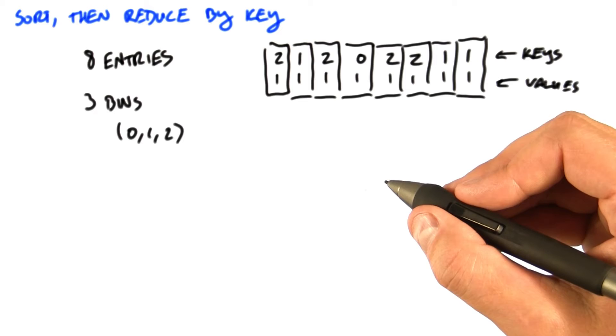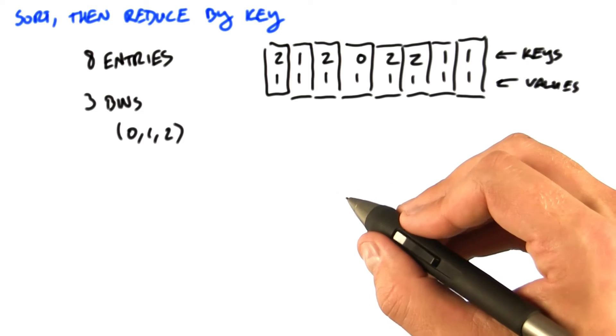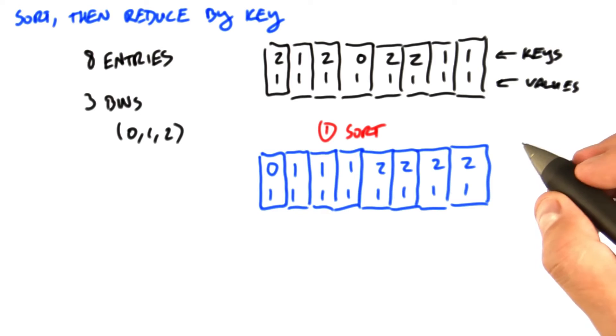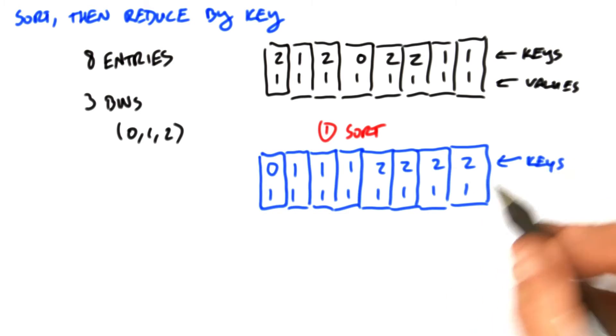This algorithm has two steps. The first is a sort, the second is a reduce. So first, let's look at the sort. We're going to sort the key value pairs by key. So here's our keys, and notice it's the same key value pairs that we have up here, but now they're in ascending order by key.